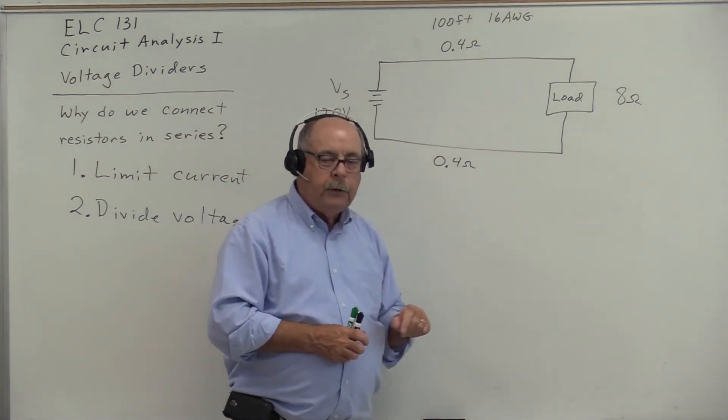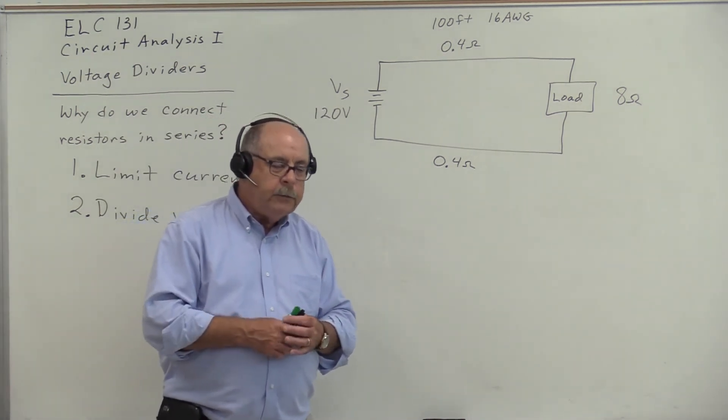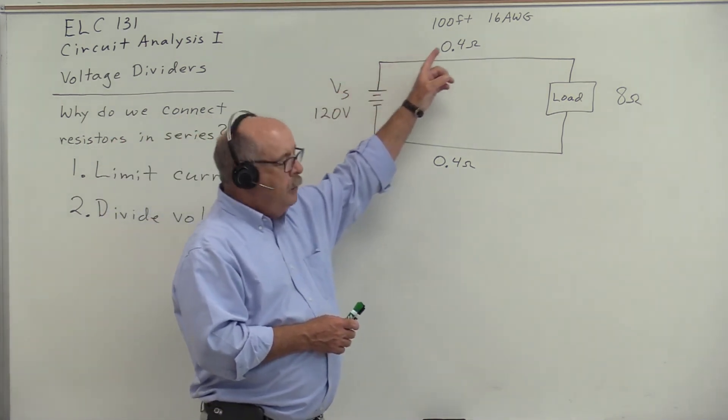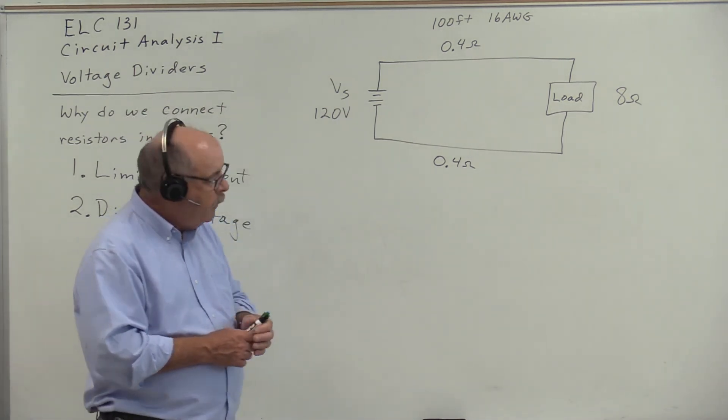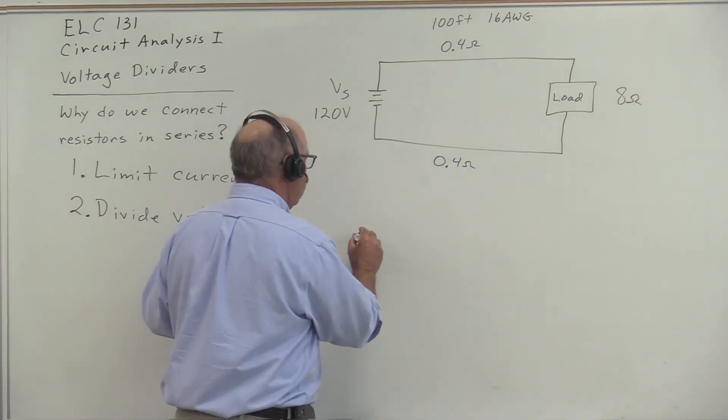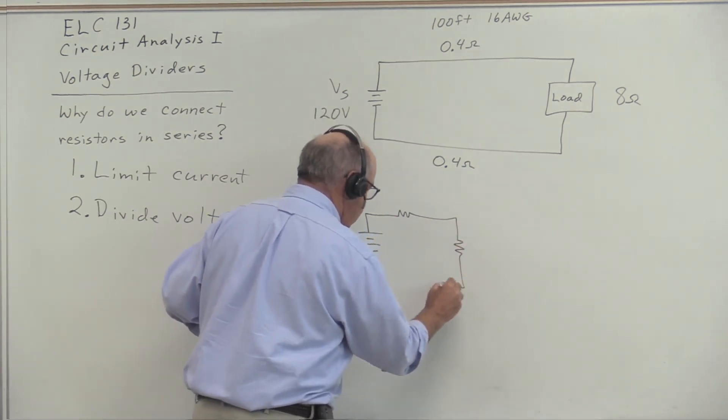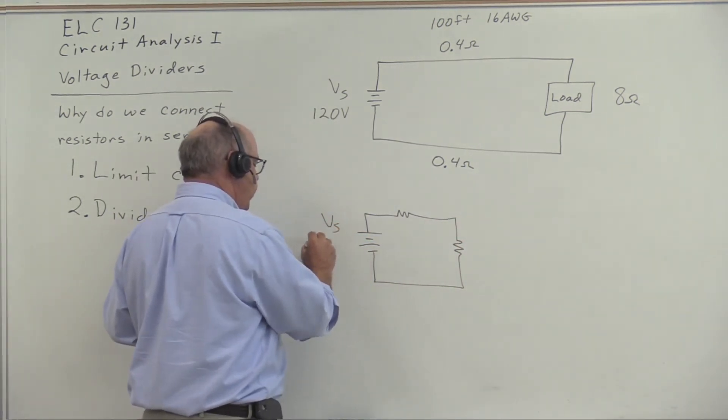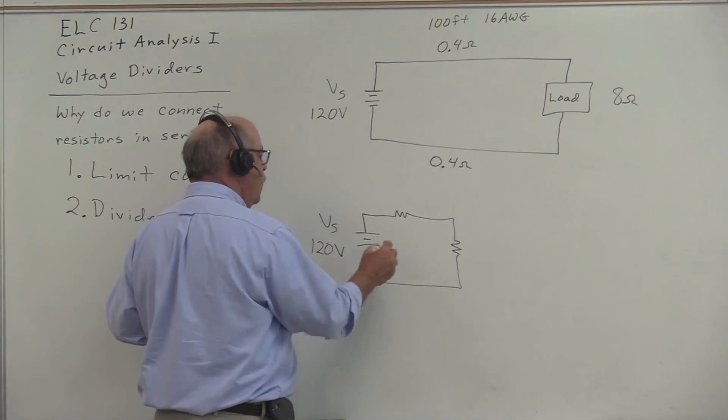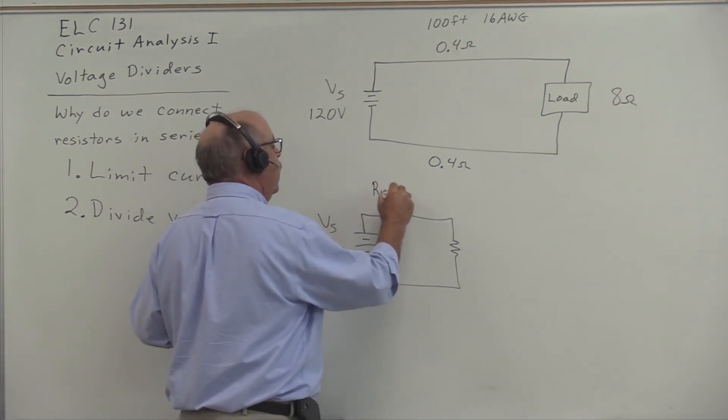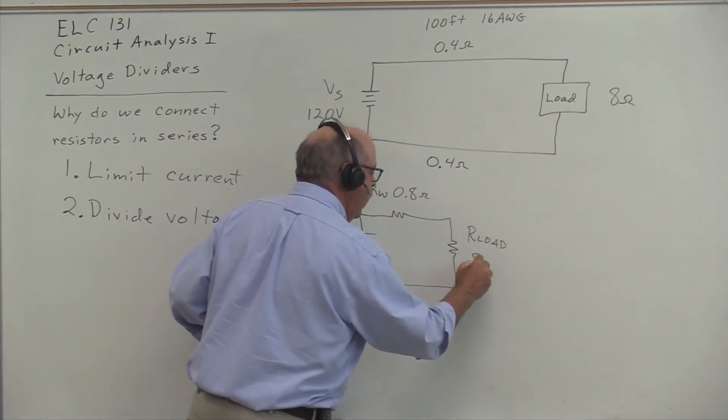My question is: how many volts will be applied to the load? Will it be all 120? No, because we have, through the use of this 100 foot extension cord, created a series circuit. The circuit that the load sees is a 120 volt source and R_W of 0.8 ohms and a load resistance of 8 ohms.